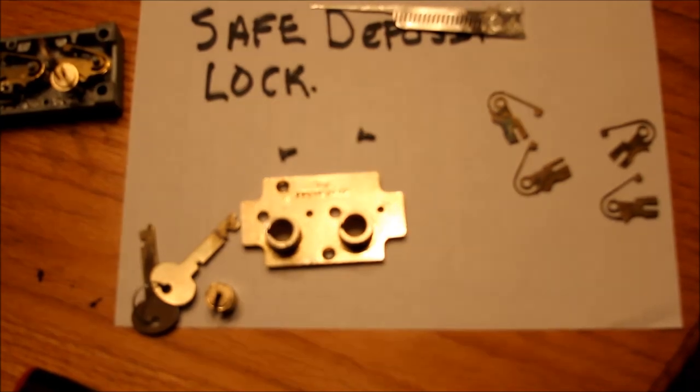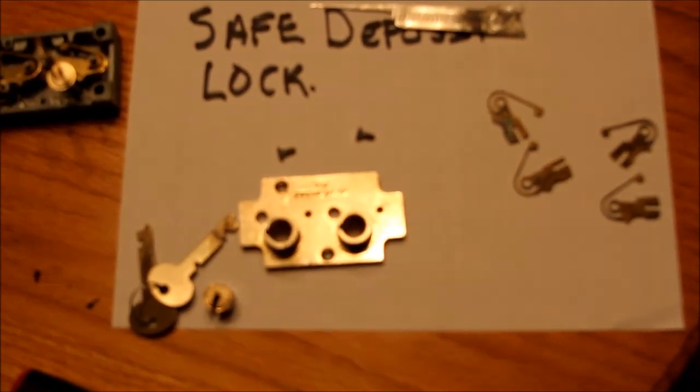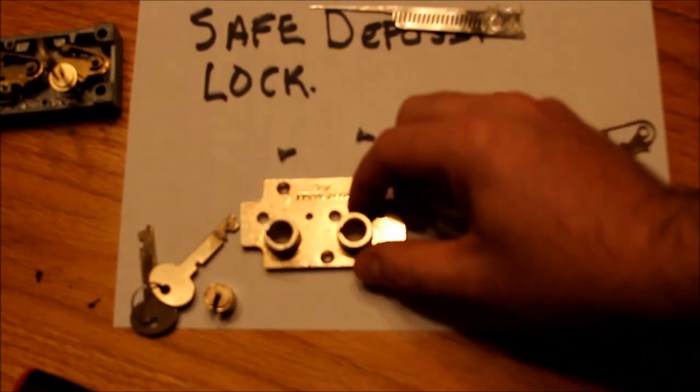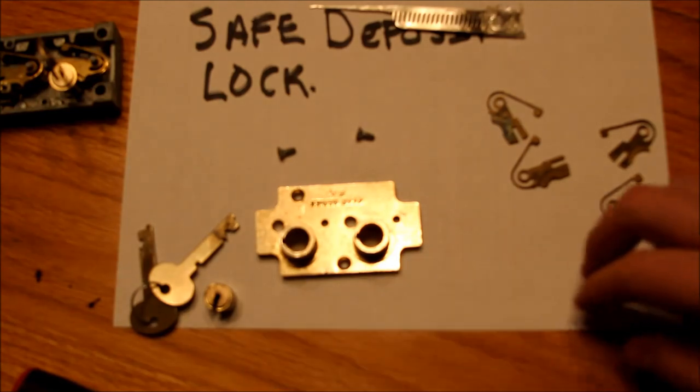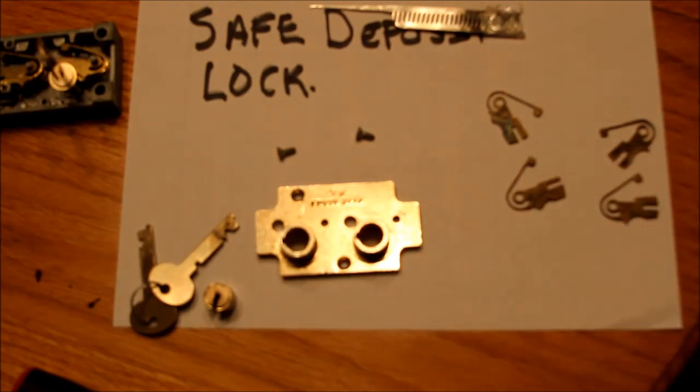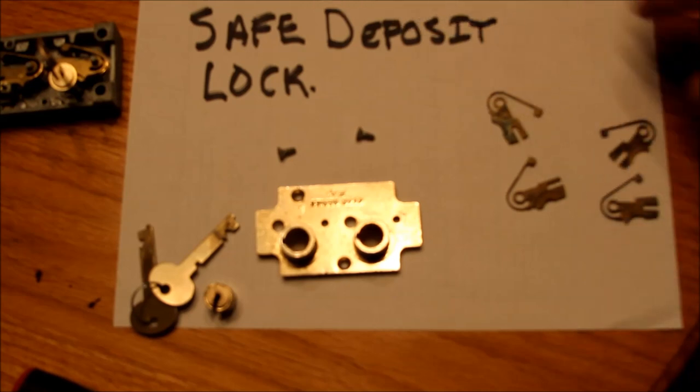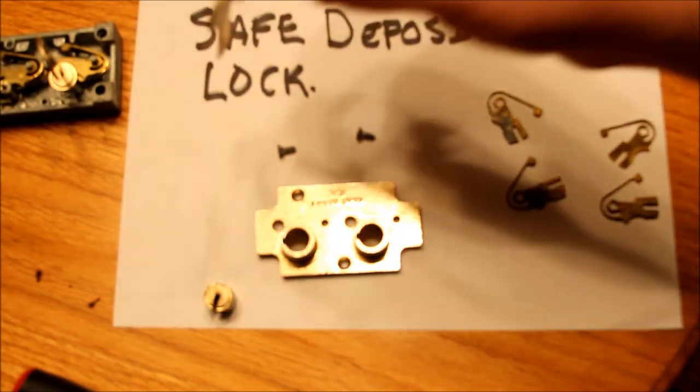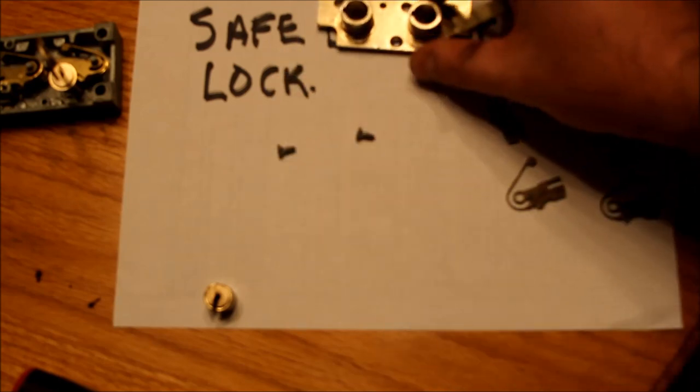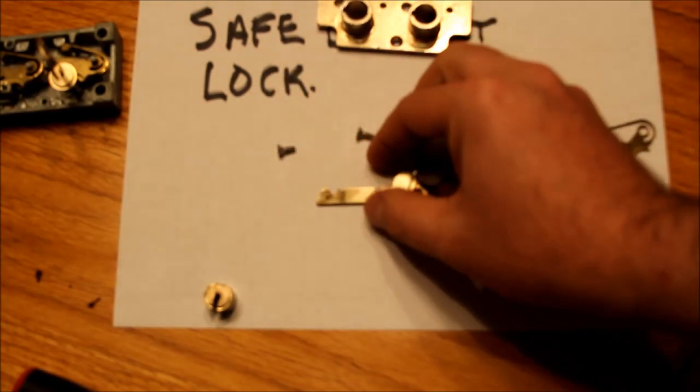So why would they do this? You have a very high security lock in many ways, the way that the levers are designed, and in other ways, a very weakly constructed lock. And the reason, of course, is that this lock is located inside of a vault in the bank. The vault providing the primary protection. And really, all these security features are just to make it hard to maybe get into someone else's safe deposit box while no one else is looking. But they don't really provide a whole lot of protection against forcible entry. But covert entry, certainly, they do.